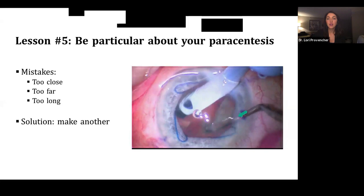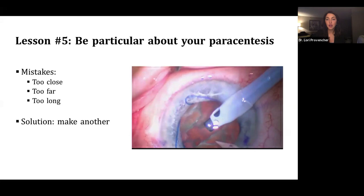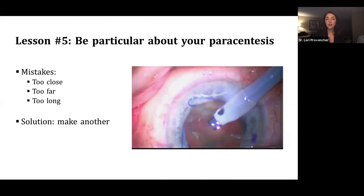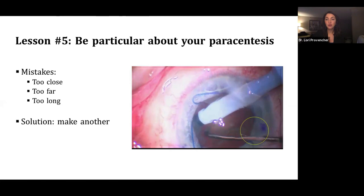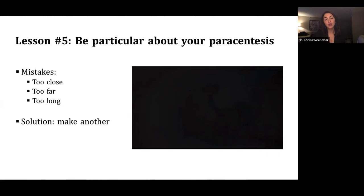You'll see in this video here that I'm getting some corneal distortion as I'm trying to crack the lens. I'm also having a lot of trouble rotating the lens, and I'm probably stressing the zonules more than necessary because of my poor para placement. And I finally just get fed up and realize what's going on. So I take my second instrument out, make another para. But it makes a world of difference. And I've circled for you that I really only moved the para about one millimeter, and it made a huge difference.